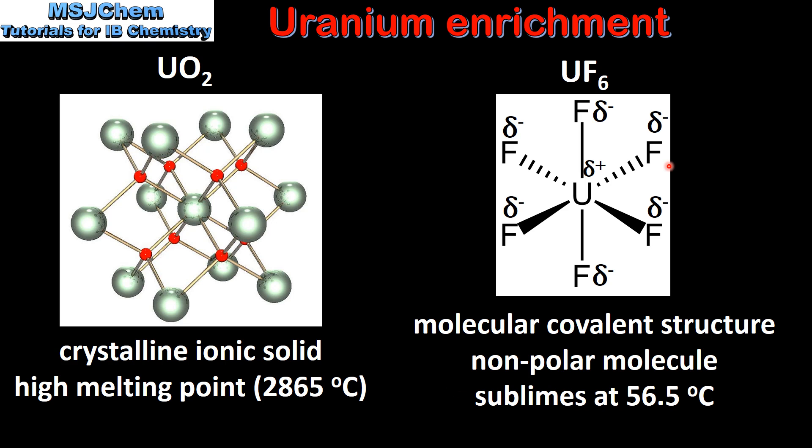Another reason for this low sublimation point is the negative dipoles on the fluorine atoms. These negative dipoles repel other molecules of uranium hexafluoride.